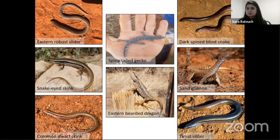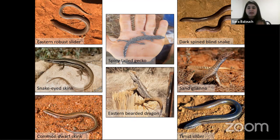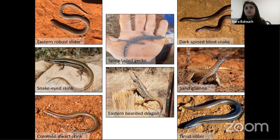There were some cool reptiles caught in my traps. There were small skinks — Eastern robust skink, snake-eyed skinks, common dwarf skink. I was scared of geckos when I was a kid, but then I caught a spinifex gecko — now it's my favorite. If someone asks what's my favorite lizard, I say spinifex gecko. It's pretty cool — look at the patterns on its skin. It's awesome.